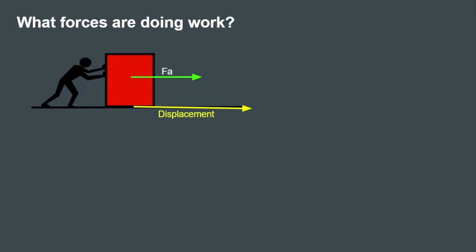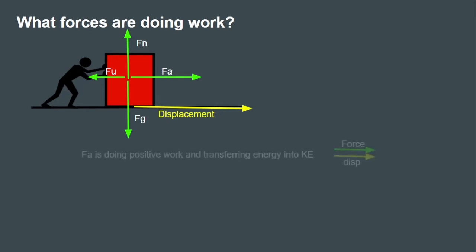We have a person pushing a box. There's a force applied to the right, friction pushing back to the left, a normal force pointing up, and gravity pointing down. Force applied and displacement are in the same direction, so force applied is doing positive work — transferring energy into kinetic energy. The angle between them is zero, so cosine of 0° equals 1, giving us positive work.